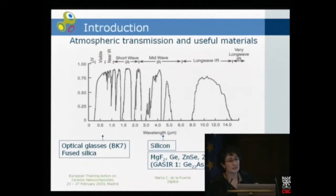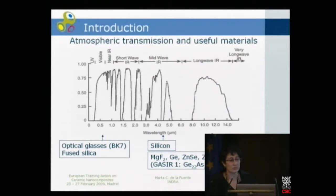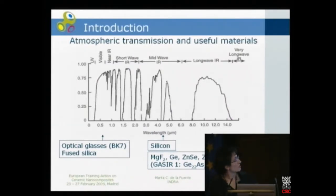We have optical glasses. Probably the most well-known is BK7 from Schott, or fused silica, or quartz, used for ultraviolet, visible, or near-infrared applications. For the infrared, the kind of material is very different. We have materials such as magnesium fluoride, germanium, zinc selenide, zinc sulfide, or chalcogenides, which have a very complex structure and composition.